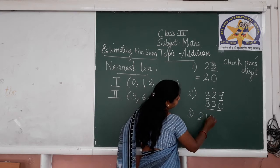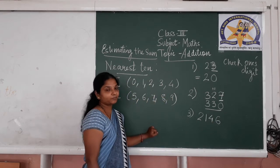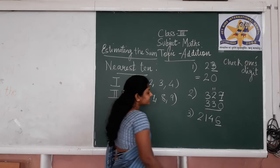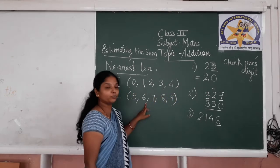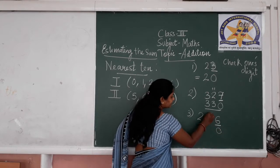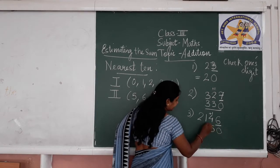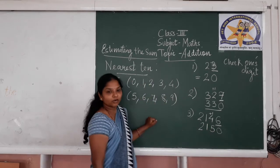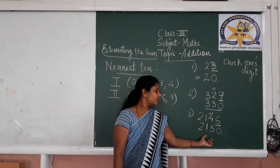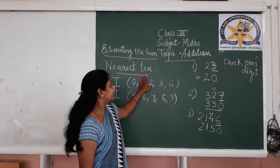The number is 2,146. Again, we are rounding to the nearest 10, so check the digit at 1's place. It is 6, which is in Group 2. If it is in Group 2, write down 0 at its place and add 1 to the 10's digit. 4 plus 1 is 5, and the remaining digits stay as they are. So the rounded-off number of 2,146 is 2,150. In this way, you round off numbers to the nearest 10.